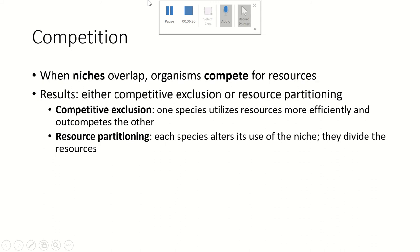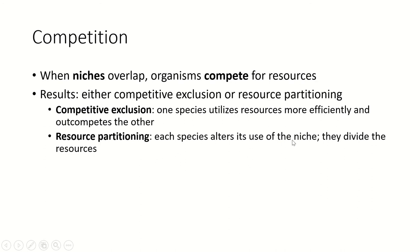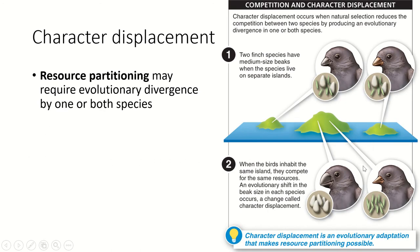Competition is what happens when niches overlap and two different organisms are trying to use the same resources. There are two things that can result: either competitive exclusion, where one species utilizes resources more efficiently and out-competes the other, or resource partitioning, where each species alters its use of the niche and they end up dividing the resources. Competitive exclusion means one species essentially wins and the other has to move to another area. Resource partitioning can actually shape the phenotype of the organisms involved — when it does that, we say character displacement has happened.